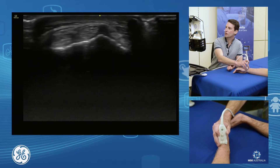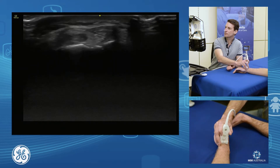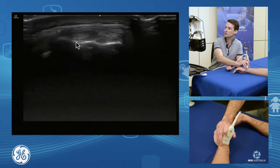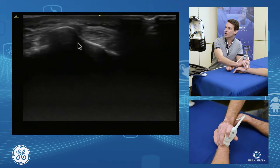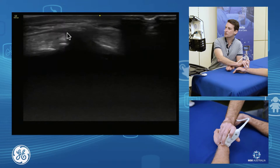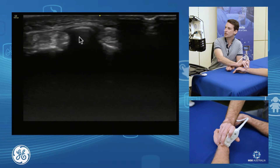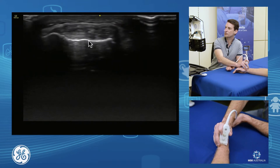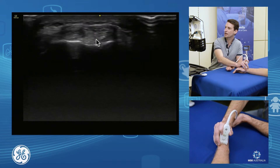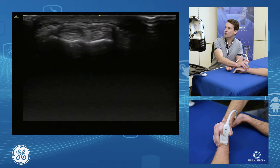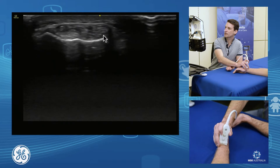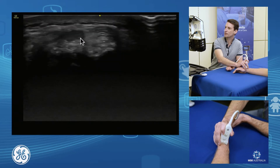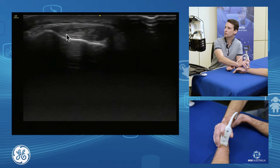As we roll around, we fall into compartment two. We have our Lister's tubercle sitting here. Compartment two sits on the lateral side, and that's our extensor carpi radialis longus and extensor carpi radialis brevis.